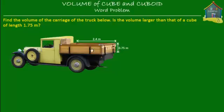What we have to do first of all is find out the volume of this carriage, and then we have to compare that volume with the volume of a cube that has a side of 1.75 meters. So first we find the volume of this object and then we compare that volume to another object.